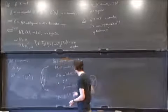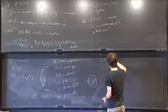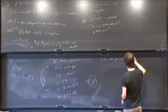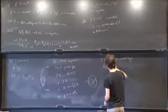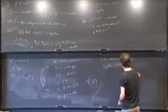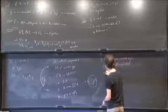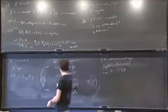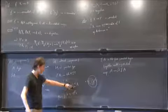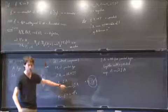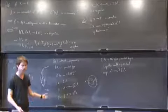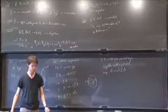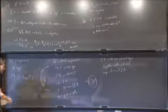In other words, ΣA is the free pointed type together with a pointed map from A to the loop space of the suspension of A. The first constructor says ΣA is pointed, the second says you have a map from A to the loop space of the suspension, and the third says that P preserves the base point. The two definitions are equivalent — you can write maps back and forth and prove the compositions are the identity.